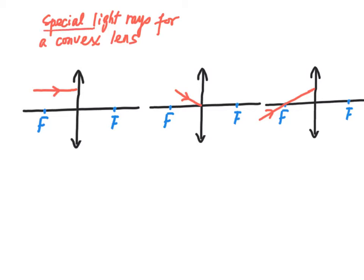There are three special light rays for a convex lens. First, when the light ray travels parallel to the principal axis, it will refract and pass through the focus on the other side. Secondly, when the light ray travels through the center of the lens, it will travel in a straight line. Third, for a light ray passing through the focus, it will refract in a direction parallel to the principal axis.